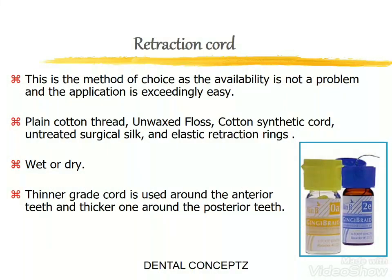Retraction cord is the method of choice as availability is not a problem and application is extremely easy. Plain cotton thread, unwaxed floss, cotton synthetic cord, untreated surgical silk, or elastic retraction rings can be used. The retraction cord can be used wet or dry. A thinner grade cord is used around anterior teeth and a thicker one around posterior teeth.